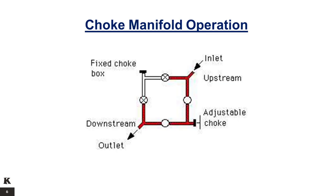The choke manifold is part of the minimum set of surface testing equipment needed when a well is being tested. It is used whenever the fluid flow rate and pressure needs to be controlled or altered for the purpose of testing the well.